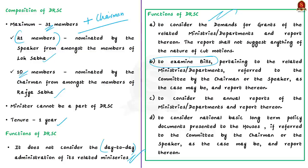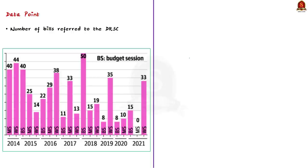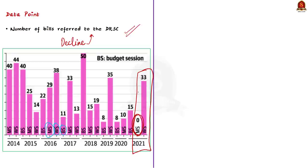The data point covers four heads. First, the number of bills referred to DRSCs — the graph shows WS for winter session, MS for monsoon session, and BS for budget session. There is a clear decline in recent years; in the 2021 monsoon session, 15 bills were introduced but none were referred to DRSCs. Even a bill as important as the Constitution Amendment to enable GST was passed without referring it to a DRSC.